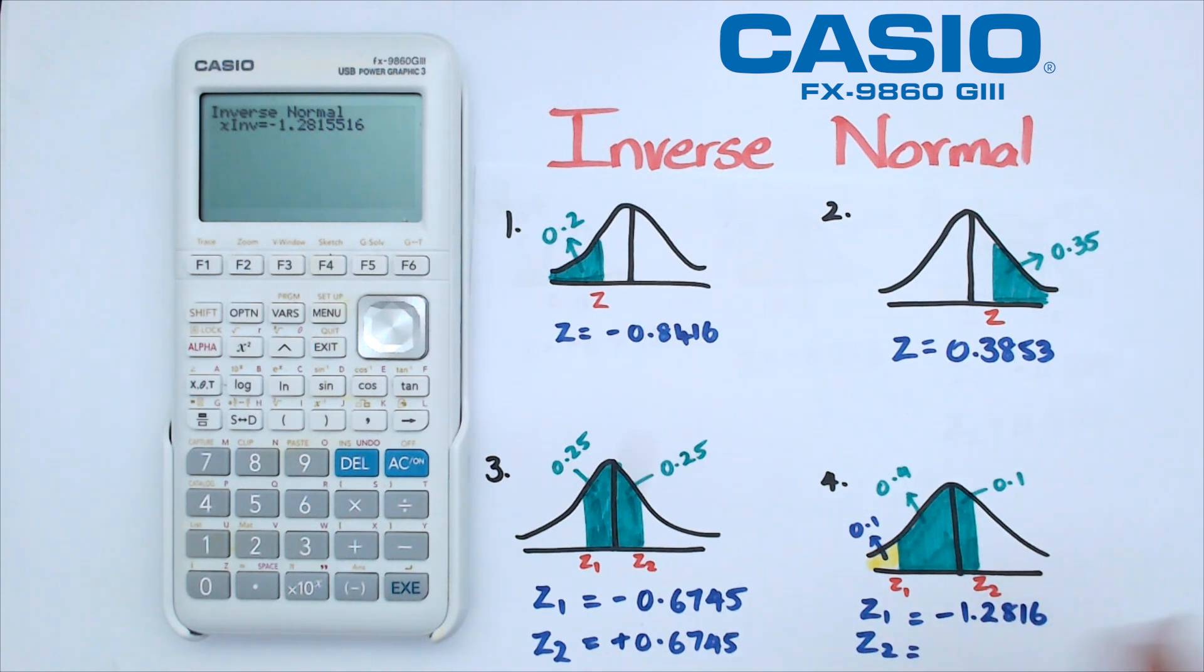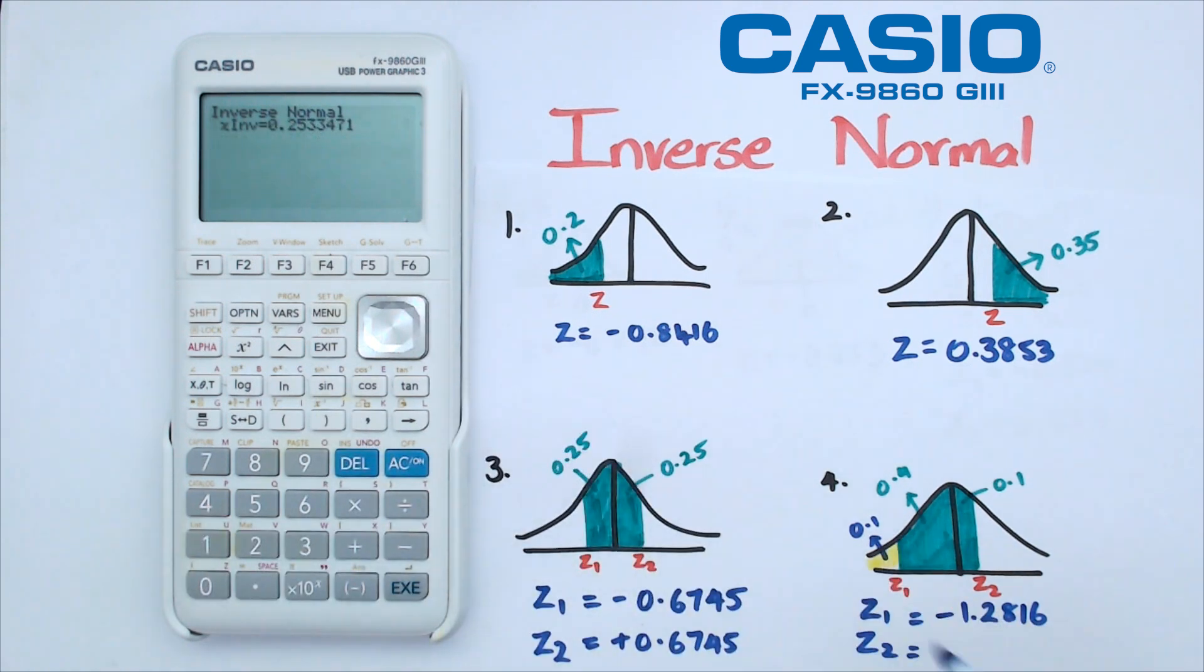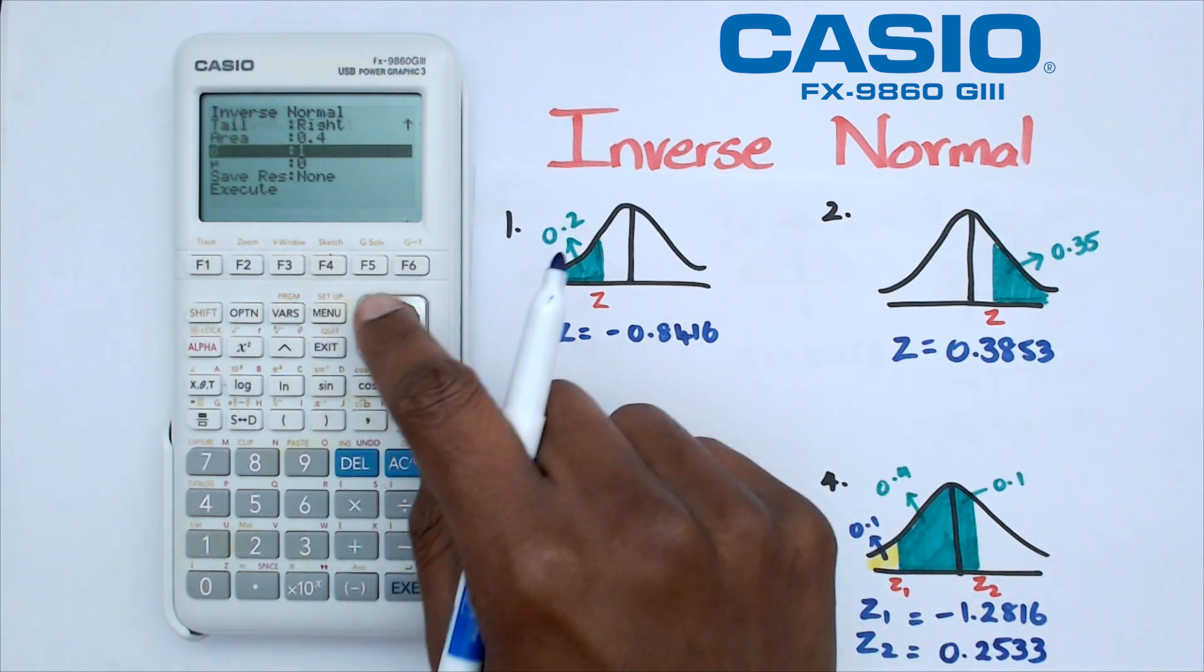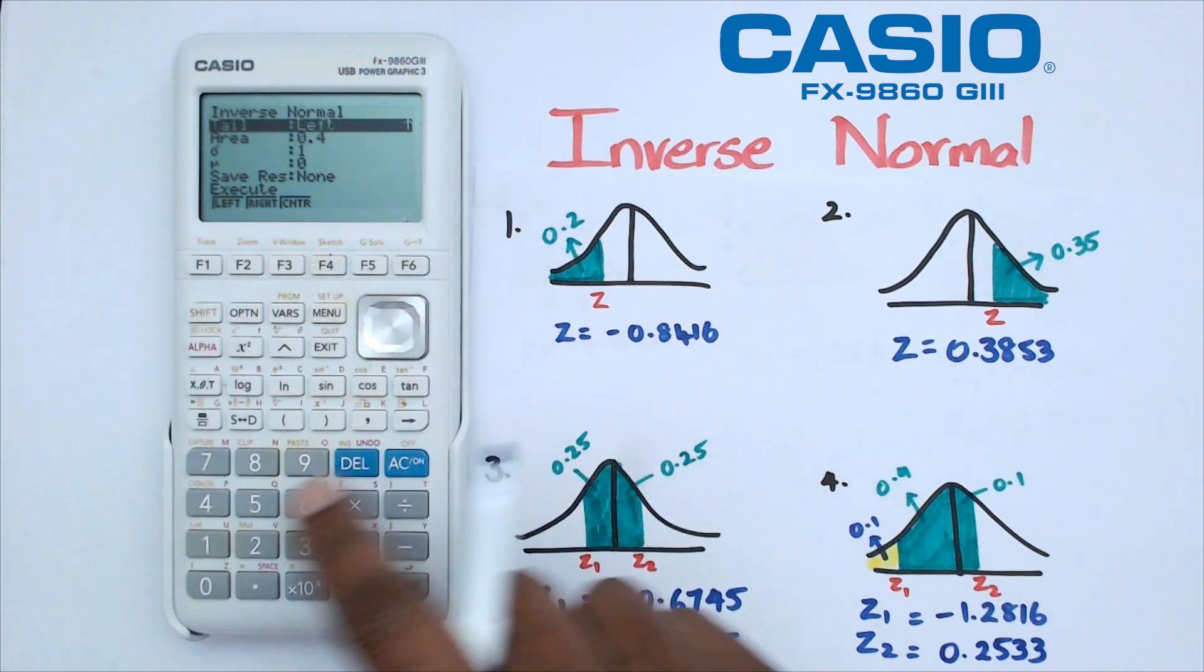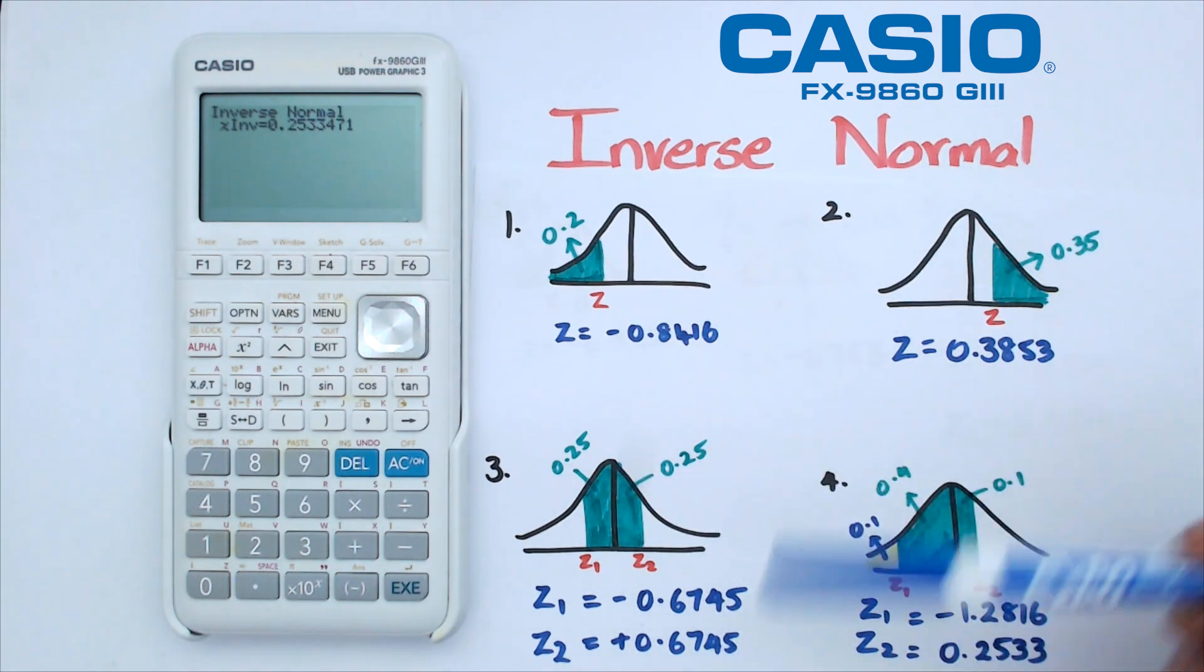If you look for z2, we could actually do left side 0.6 or right side 0.4. Because we're already in the right side, I'm going to try 0.4, and what we get is 0.2533. If I try the left side and put that as 0.6, I should get the same value, which is 0.2533.